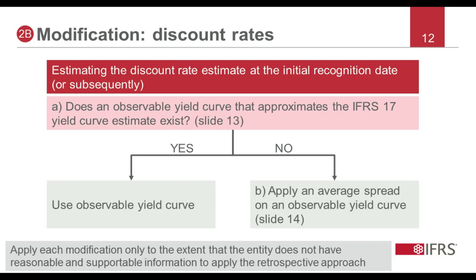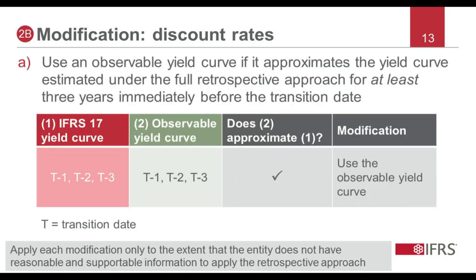How do we determine if an observable yield curve approximates the IFRS 17 yield curve determined under the fully retrospective approach? The entity will make this judgment based on: firstly, determining the IFRS 17 yield curve; and secondly, assessing if there is an observable yield curve that approximates the IFRS 17 yield curve for at least three years immediately prior to the date of transition. For entities with a transition date in 2020, the assessment will be for yield curves at least in the 2017, 2018, and 2019 periods. If the observable yield curve approximates the IFRS 17 yield curve for those periods, then it should be used to determine the discount rates in periods where the entity does not have reasonable and supportable information.